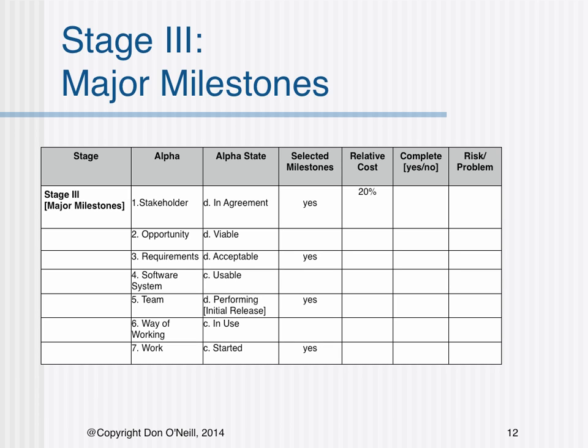Stage 3 entails completing major project milestones. Stakeholders are in agreement. The opportunity is viable. Requirements are acceptable. The software system is considered usable. In addition, the team has performed an initial release, the way of working is in use, and work has started. The critical selected milestones revolve around stakeholder agreement, acceptable requirements, the team performing the initial release, and work having started.